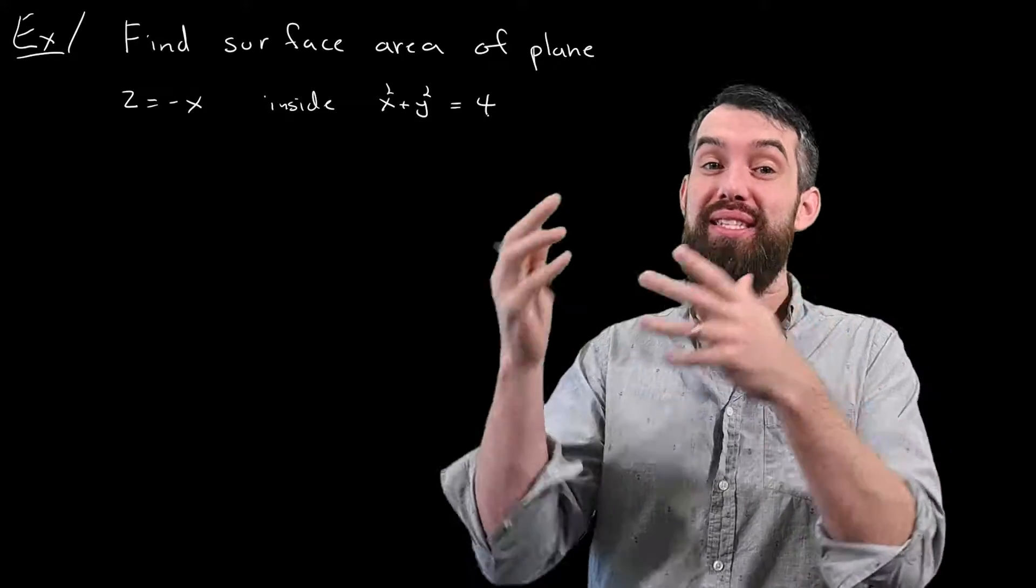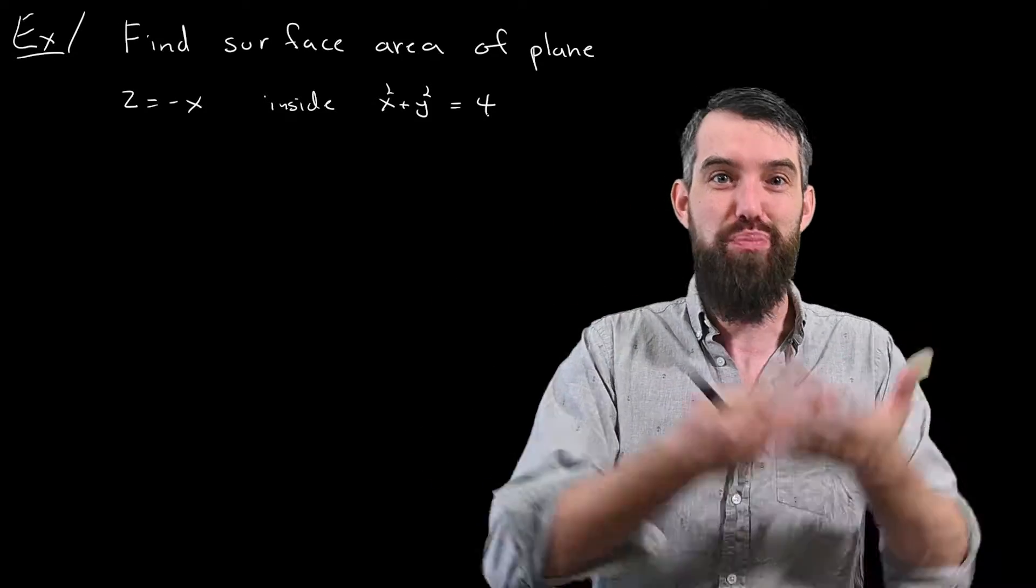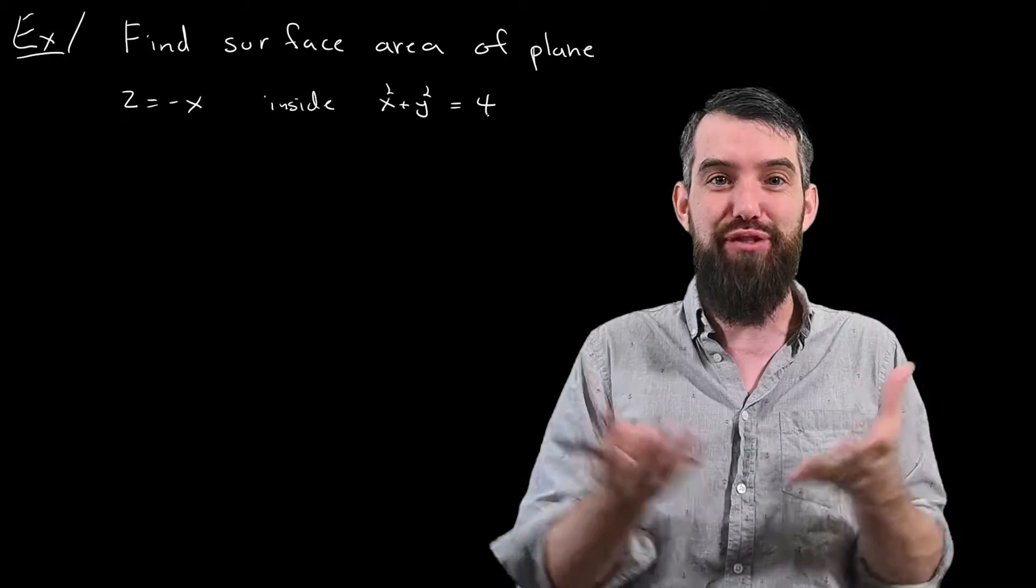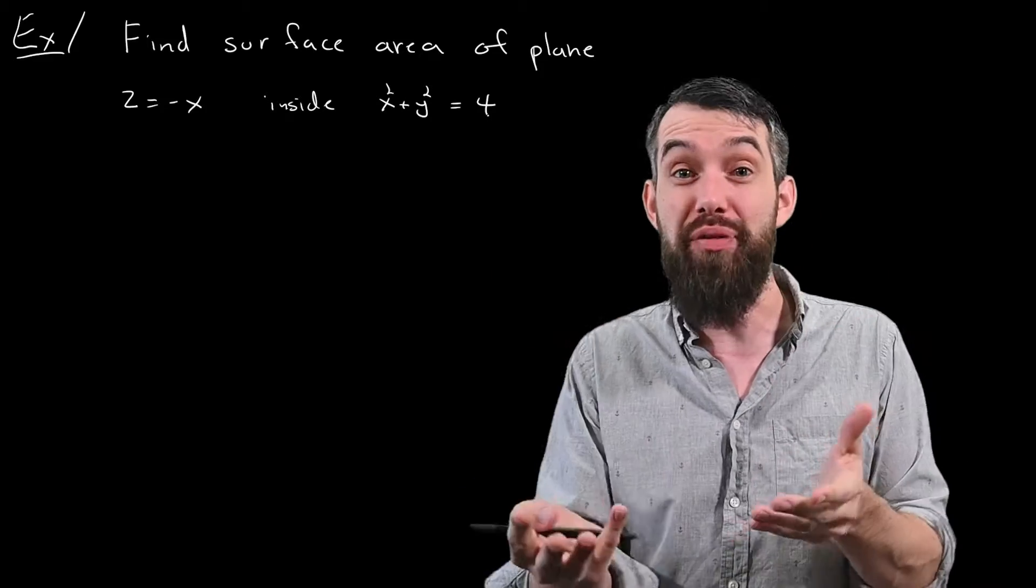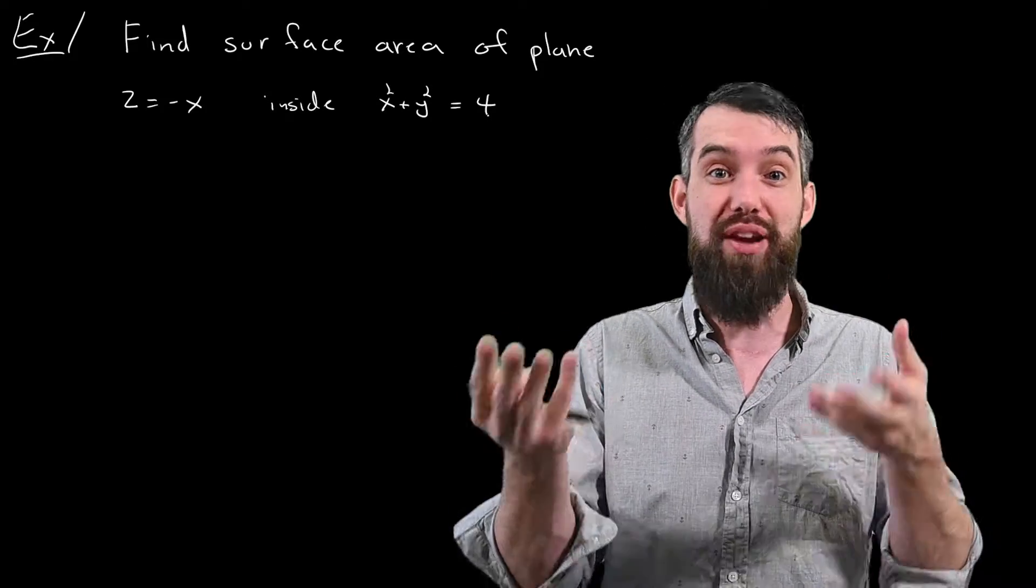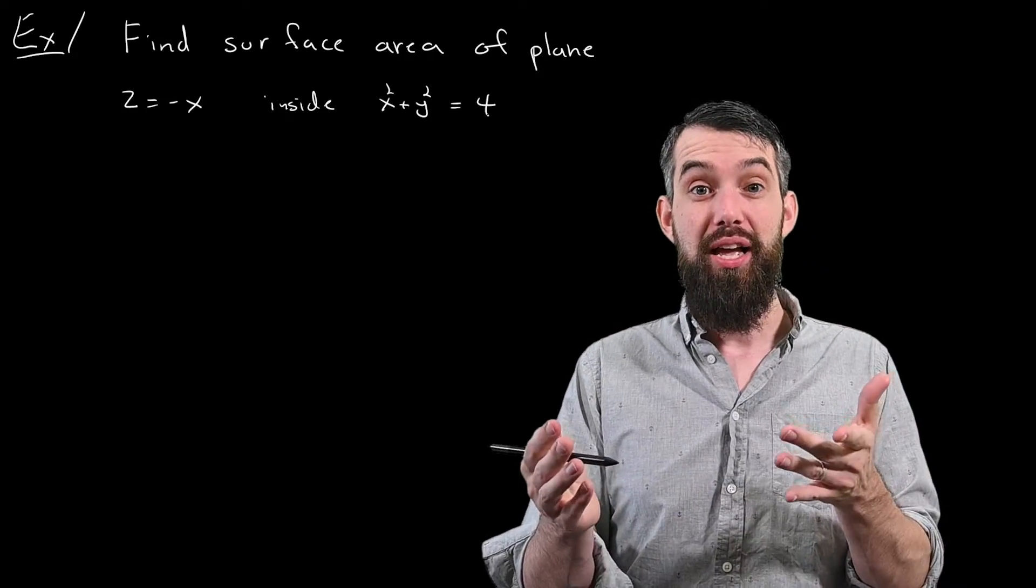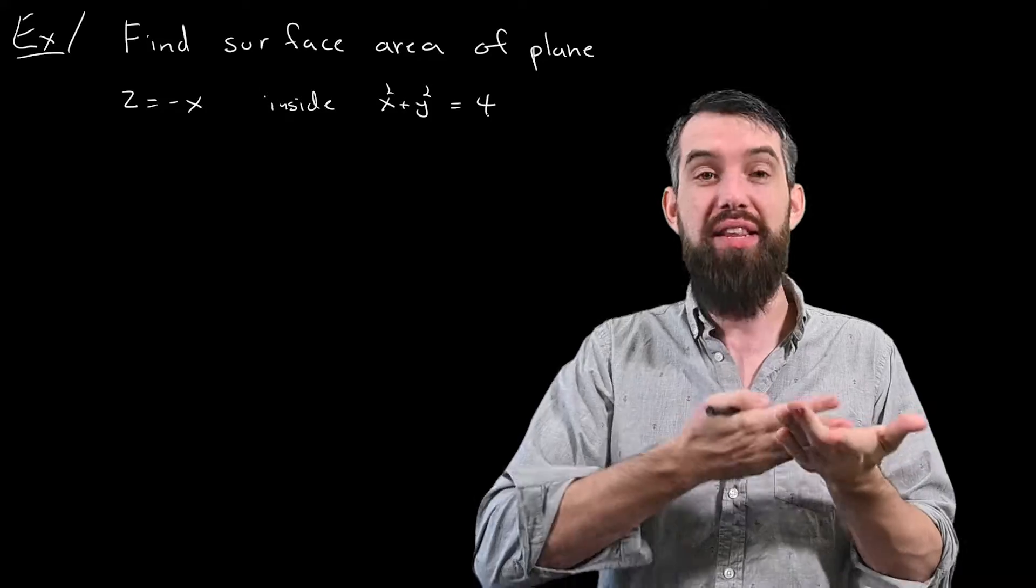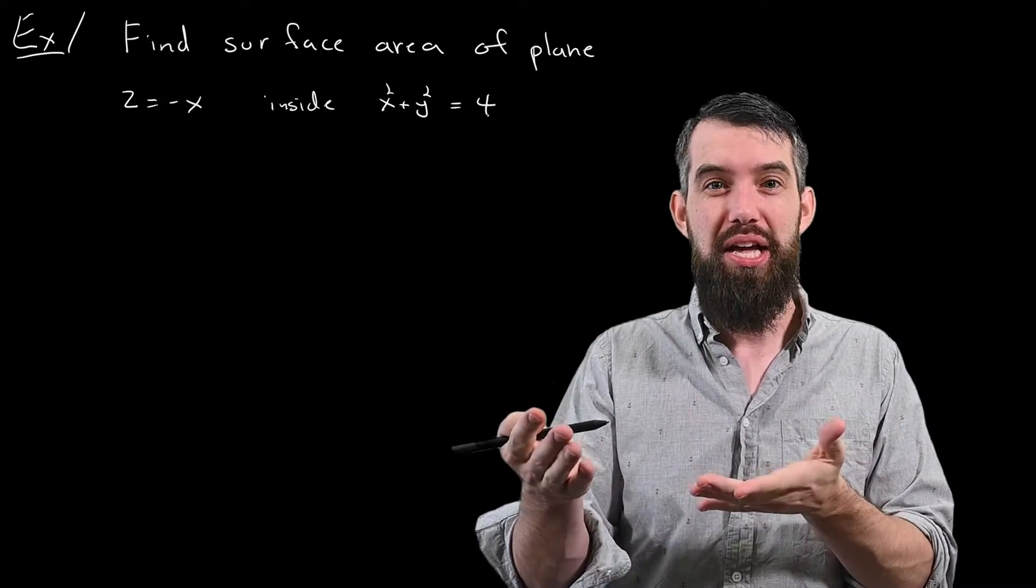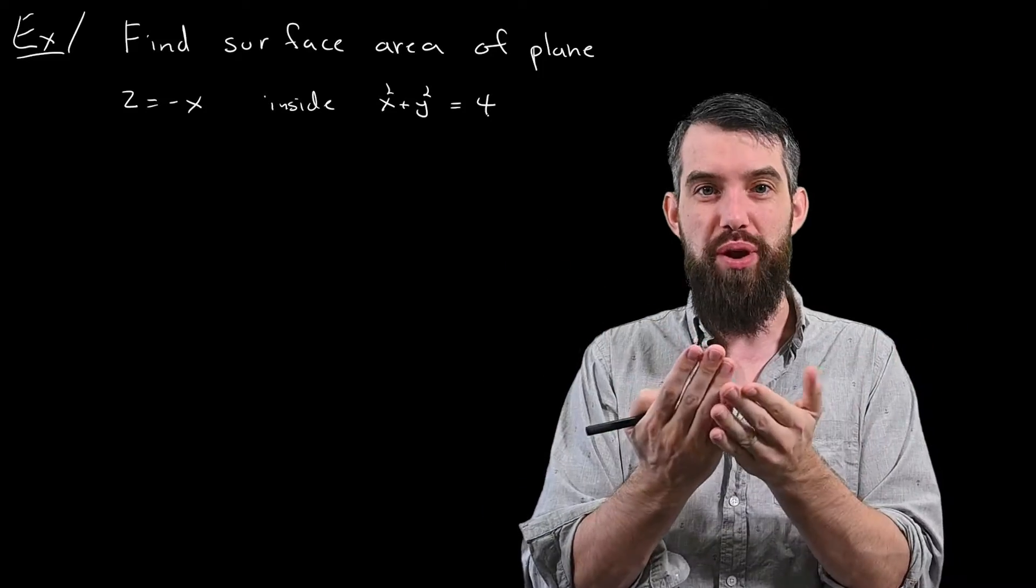This is actually my second example of computing a surface area via a parameterization. In the previous example, we looked at the surface area of a sphere and showed that that was 4π times the radius squared, so feel free to check out that video and any other video in my vector calculus playlist. So this problem reads, find the surface area of some plane, the plane that's described by z equals minus x, that is inside the cylinder x squared plus y squared equals 4.